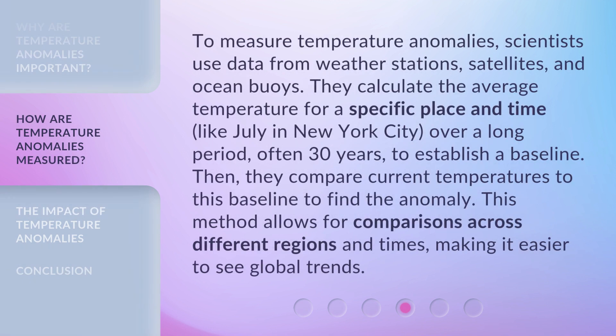To measure temperature anomalies, scientists use data from weather stations, satellites, and ocean buoys. They calculate the average temperature for a specific place and time, like July in New York City, over a long period — often 30 years — to establish a baseline. Then they compare current temperatures to this baseline to find the anomaly. This method allows for comparisons across different regions and times, making it easier to see global trends.